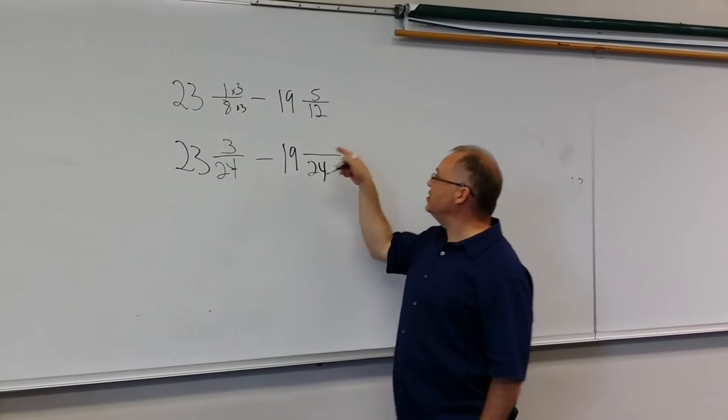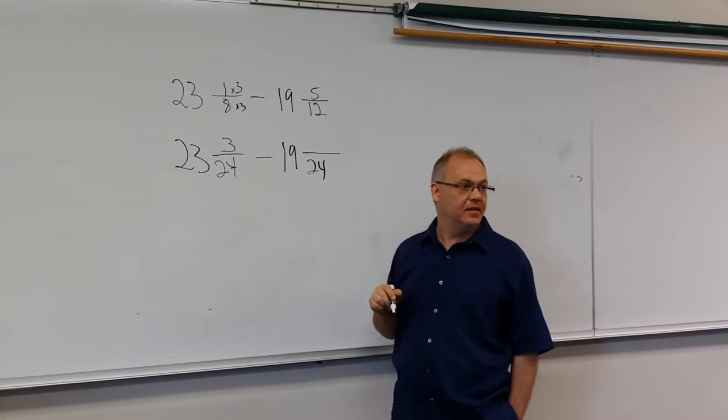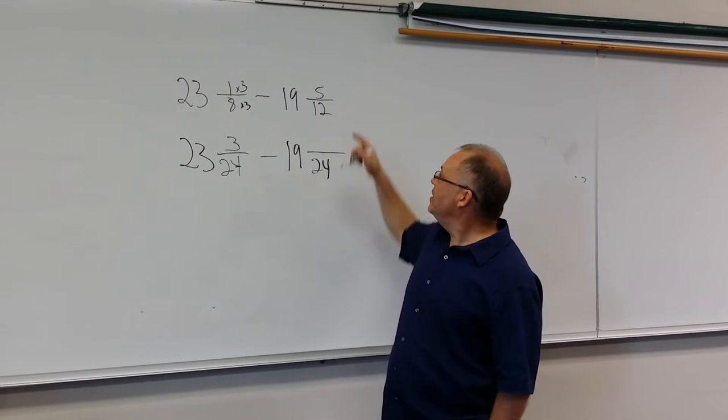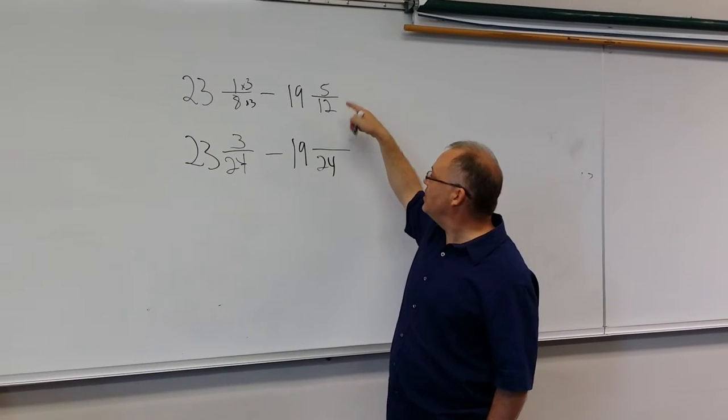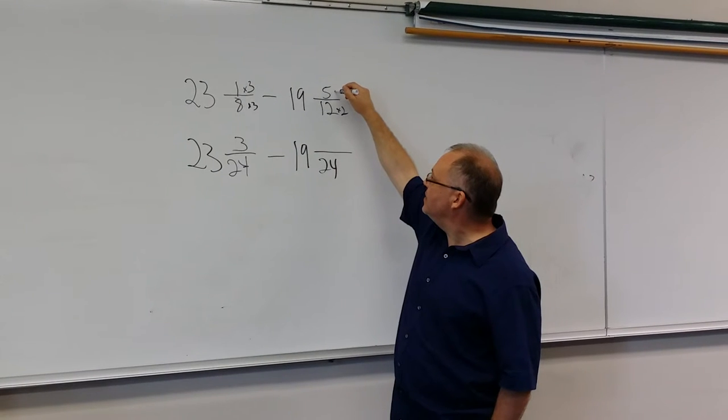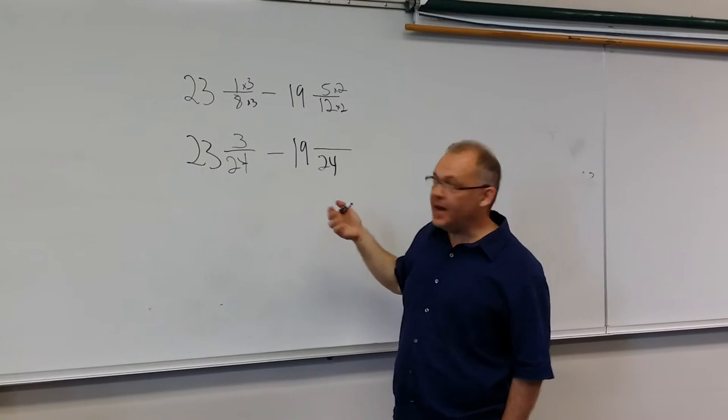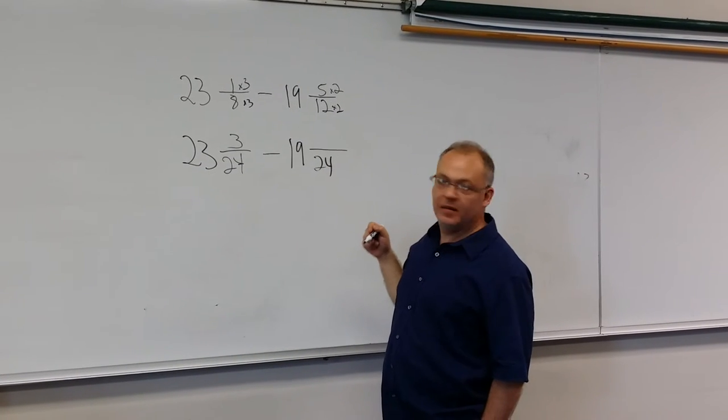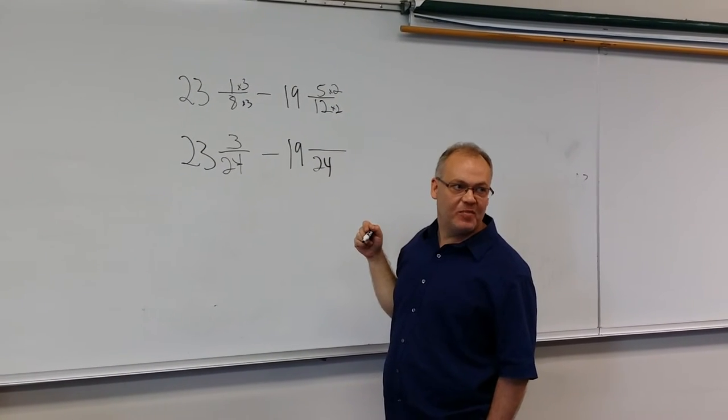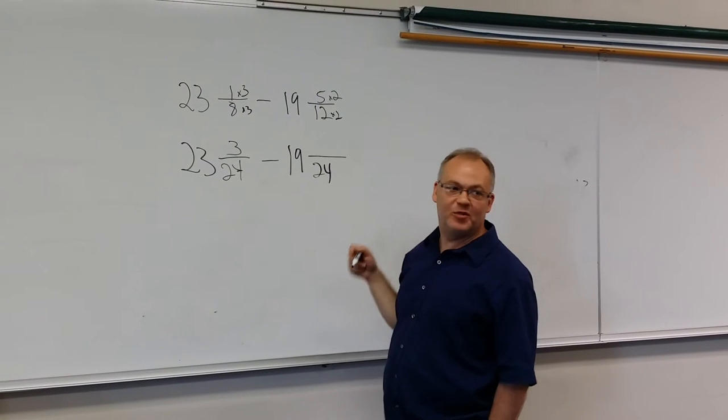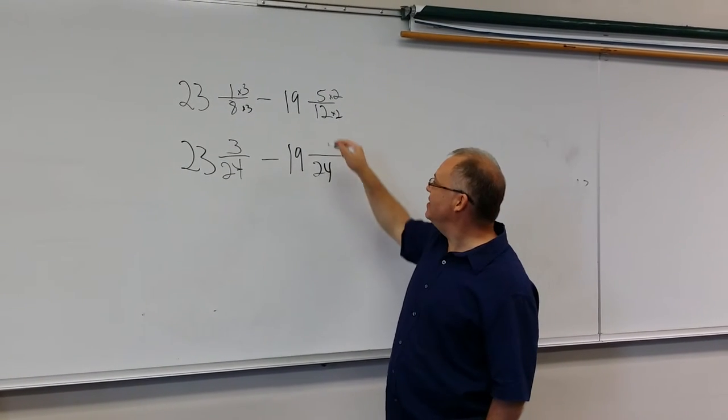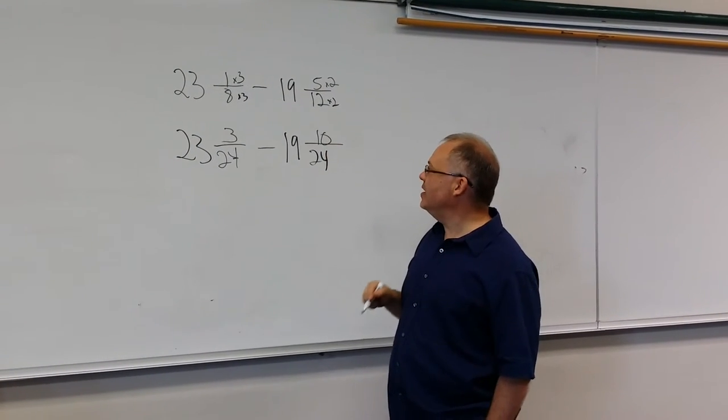And 12 goes into 24 by? 2. So 12 times 2 and then 5 times 2. What you do to the bottom, you do to the top. And 5 times 2 is? 10.